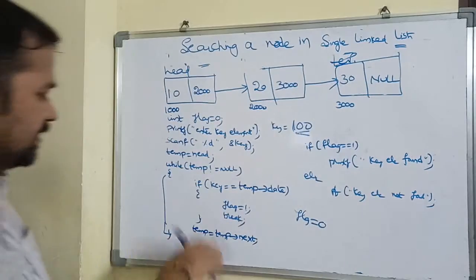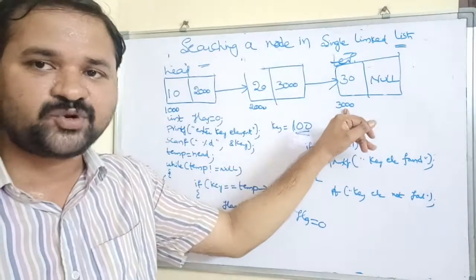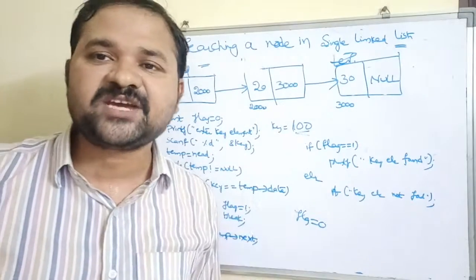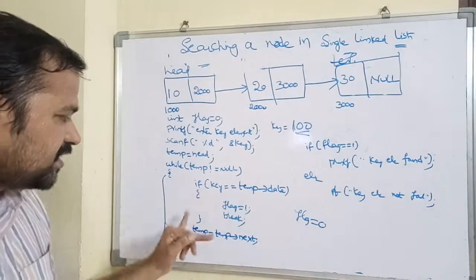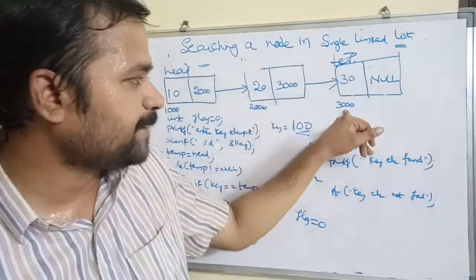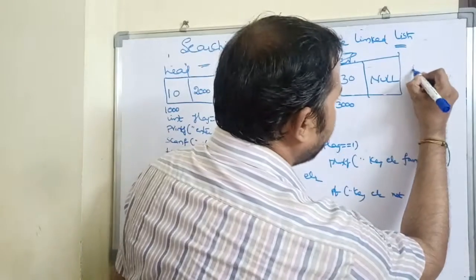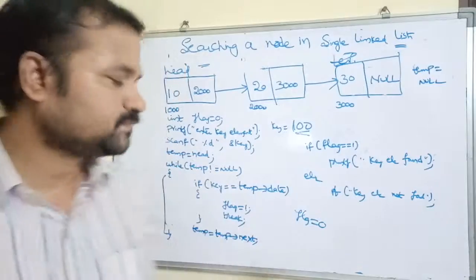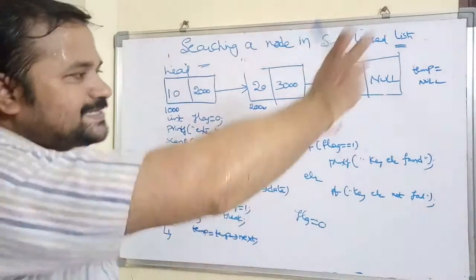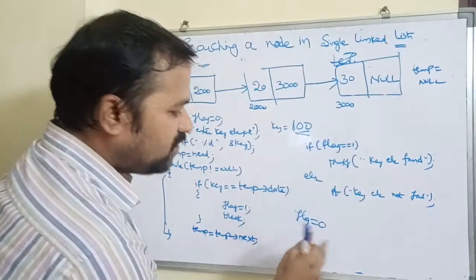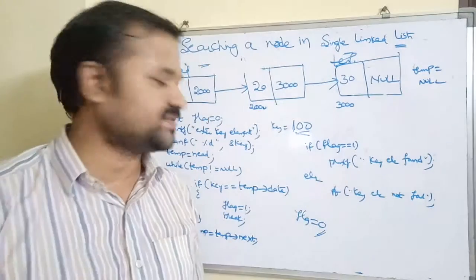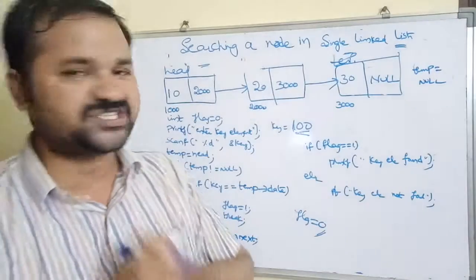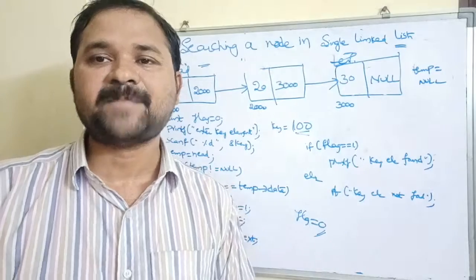temp = temp->next: 2000's next is 3000, so temp becomes 3000. While 3000 != null — condition is true. key == temp->data: 100 == 30 — false. temp = temp->next: 3000's next is None, so temp becomes None. Now while temp != null: None != null — condition is false, so the control exits the while loop. The list is exhausted and the key element is not found. flag == 1 is false (flag is still 0), so we print 'key element not found.'